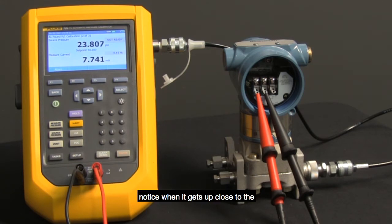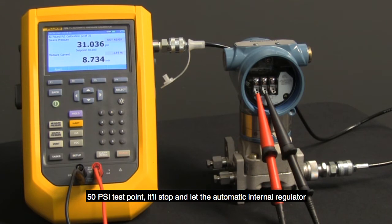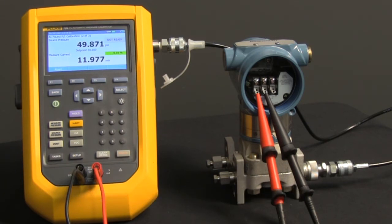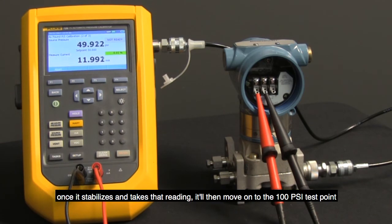Notice when it gets up close to the 50 PSI test point, it'll stop and let the automatic internal regulator fine-tune automatically and hold steady at that 50 PSI test point. Once it stabilizes and takes that reading, it'll then move on to the 100 PSI test point.